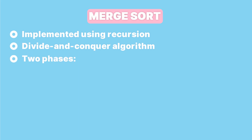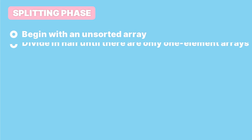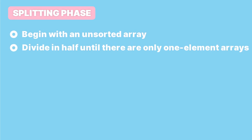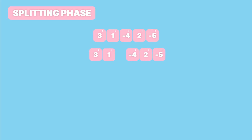Merge sort sorts the array in two phases: dividing or splitting the array, and then combining or merging them back in sorted order. The first phase is the splitting phase — we begin with an unsorted array and divide it in half repeatedly until there are only one-element arrays. When dividing an odd-size array, the extra element always goes to the right array.